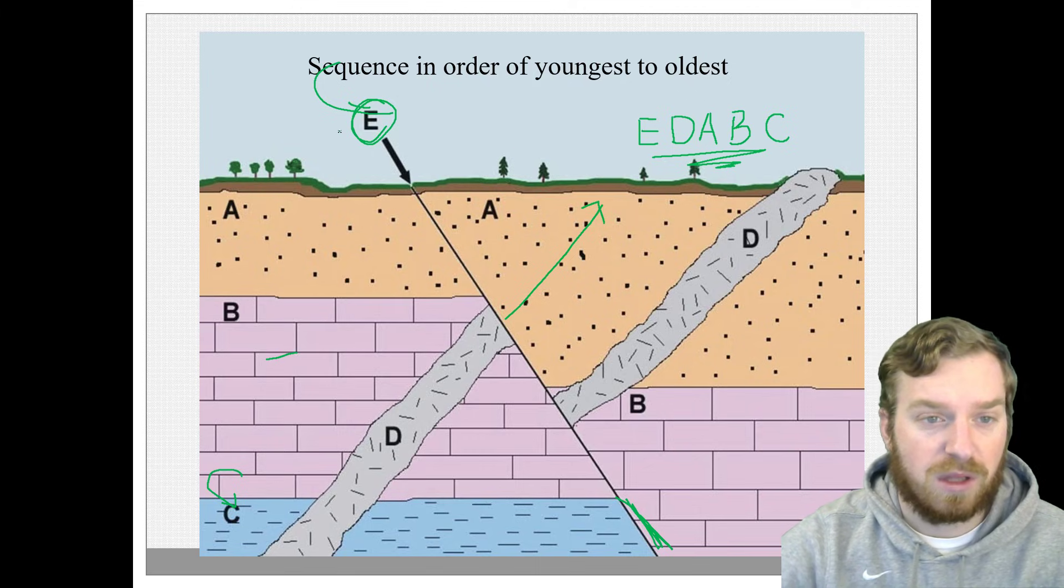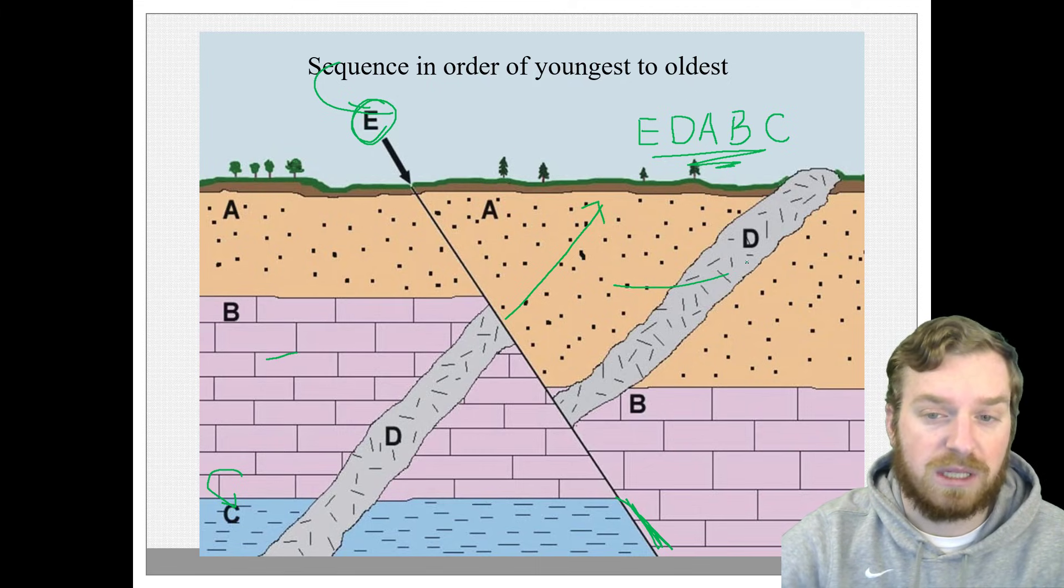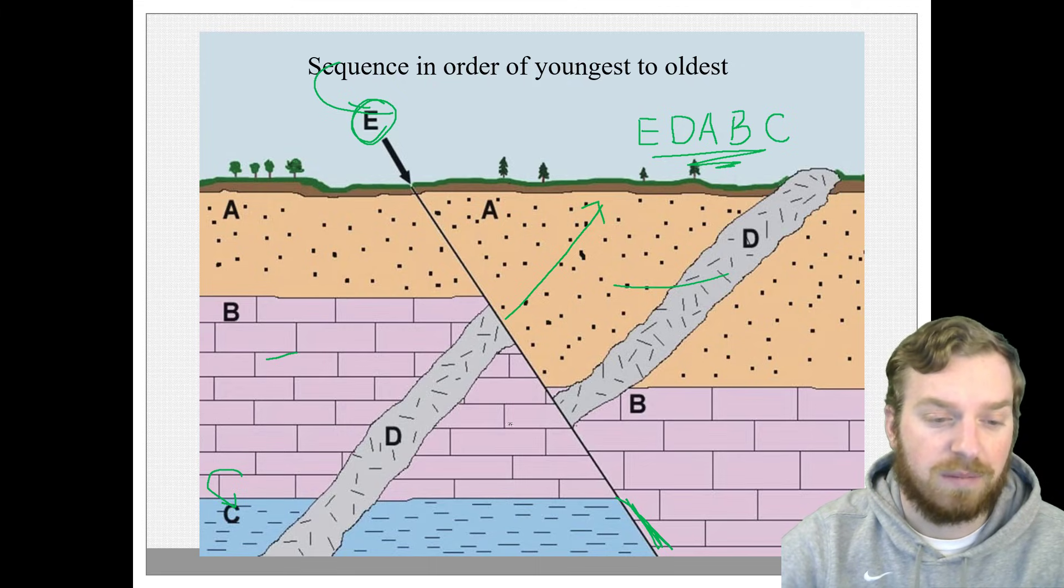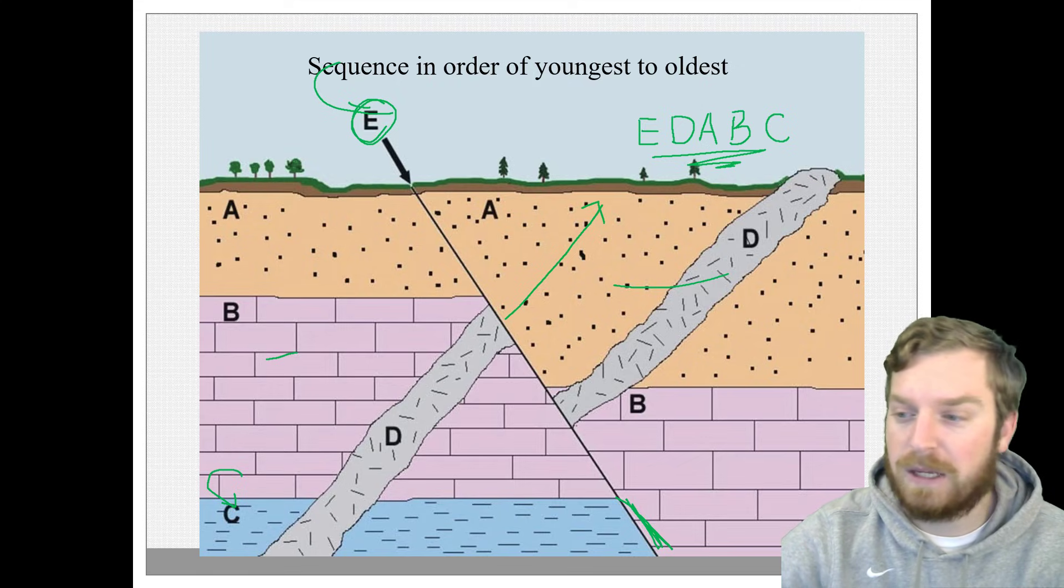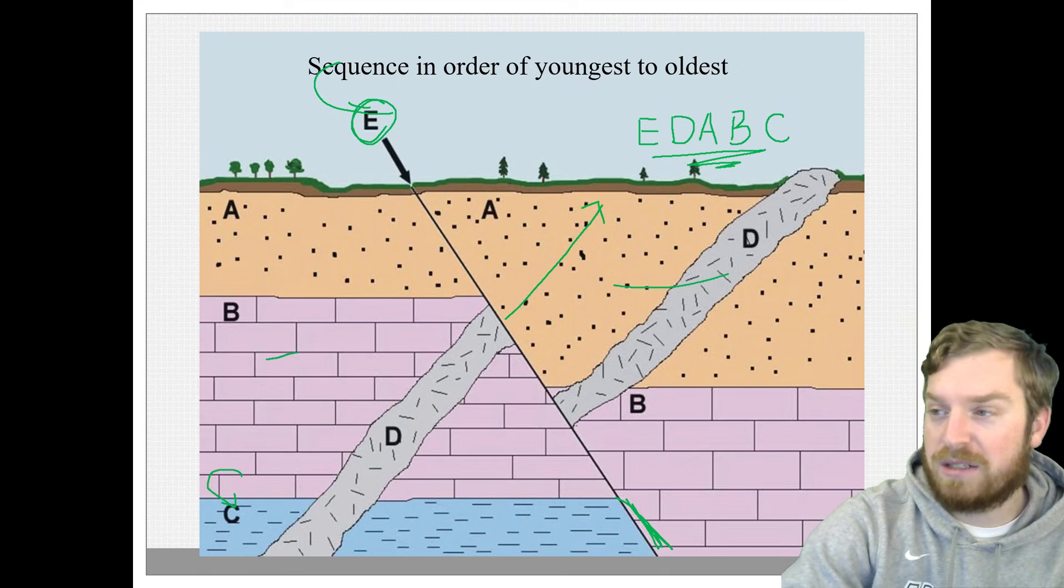And so this is the order that these rocks happen. E was the most recent event. D was the second most recent. Then A, then B, then C. Alrighty. Not too shabby.